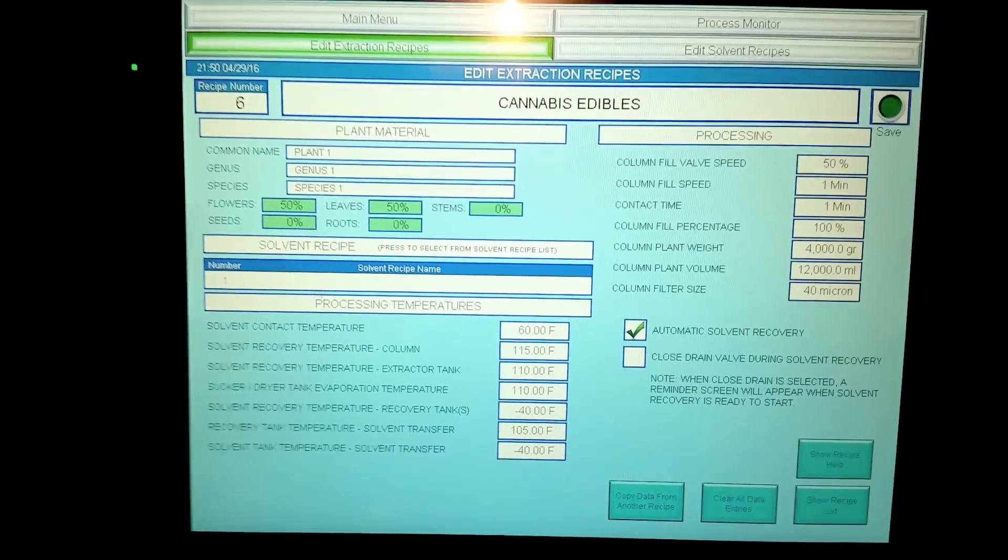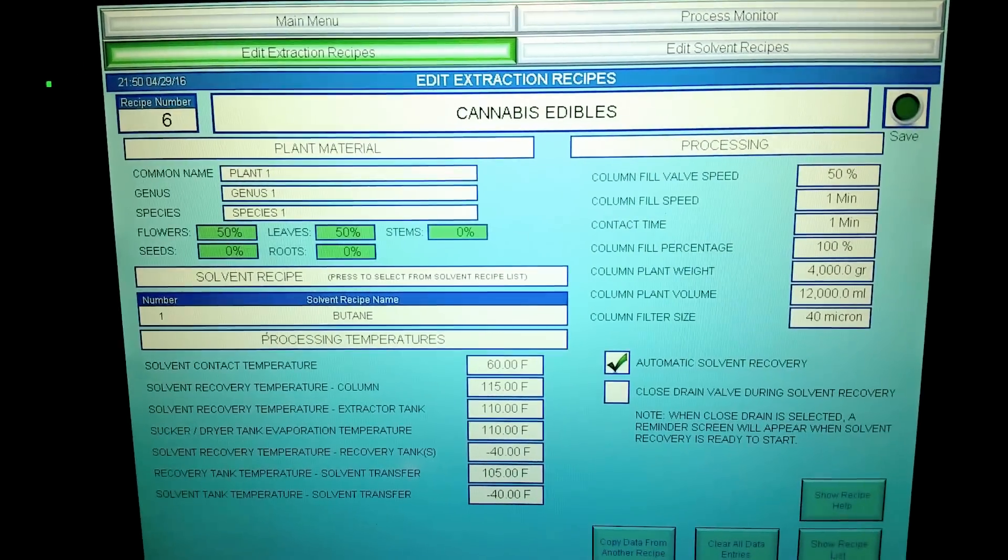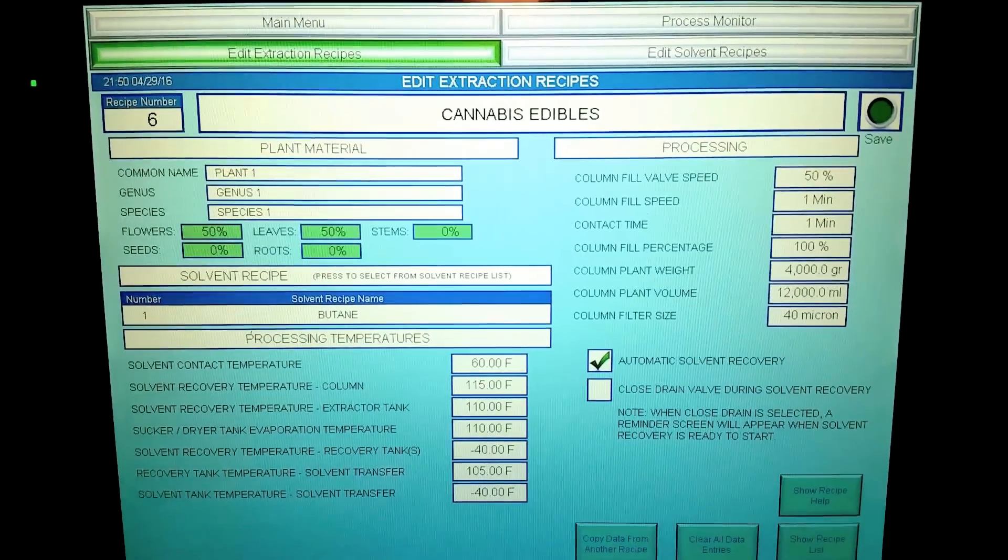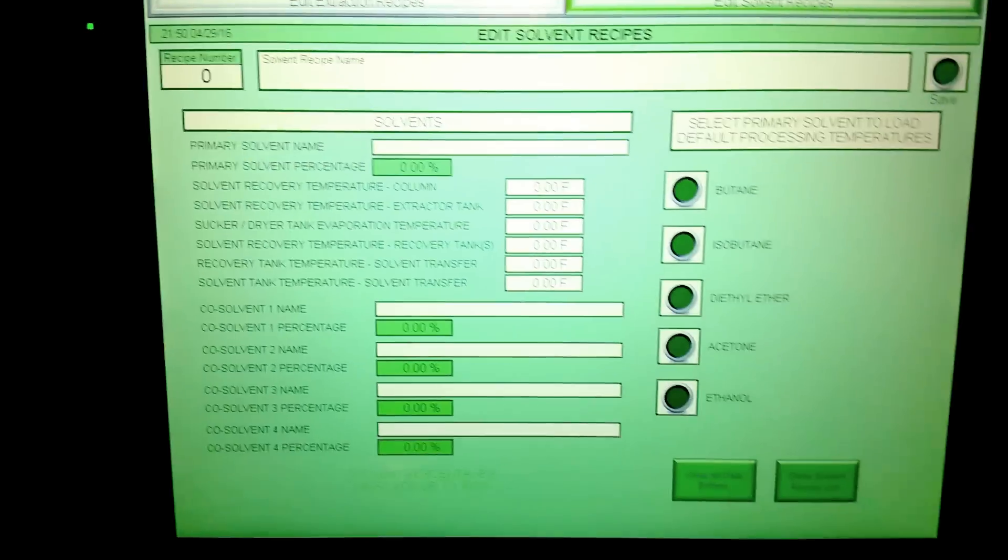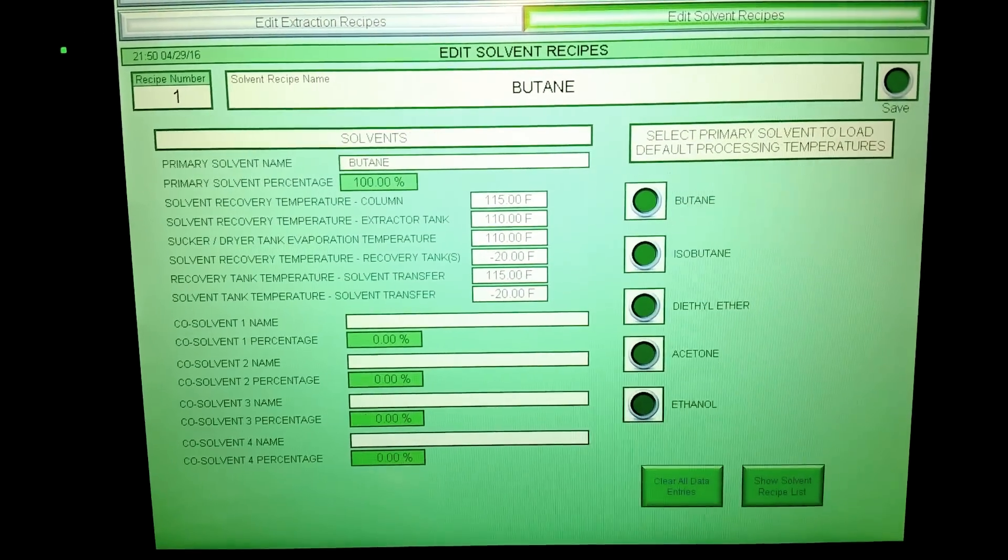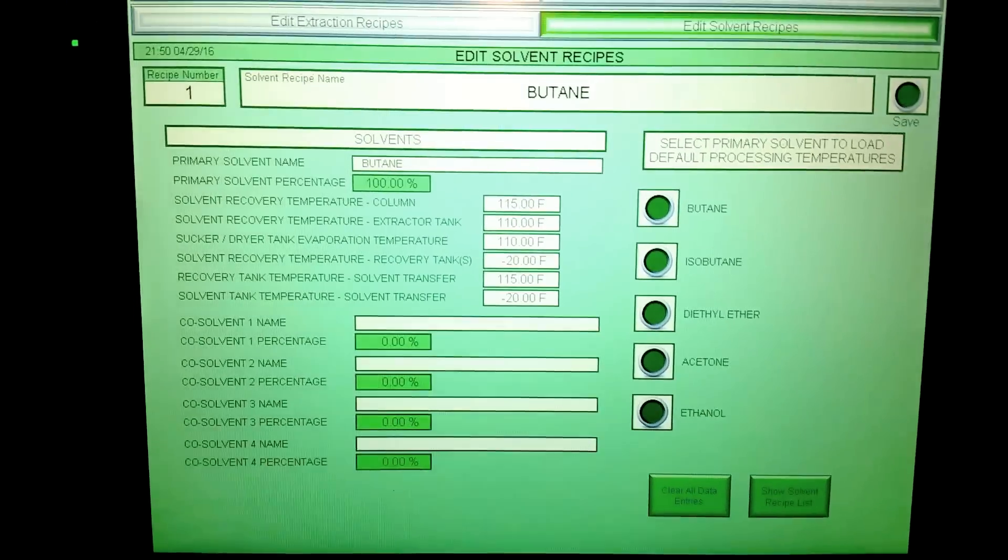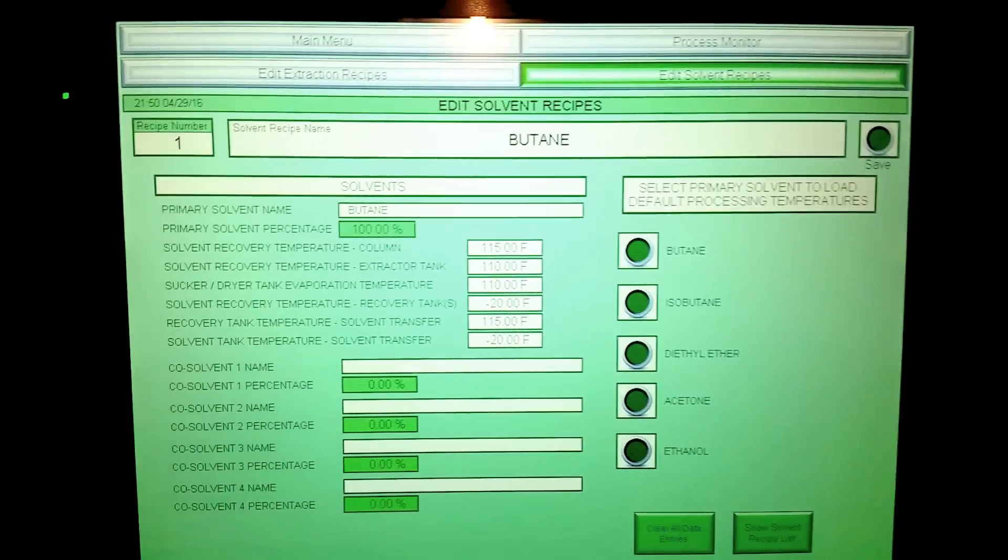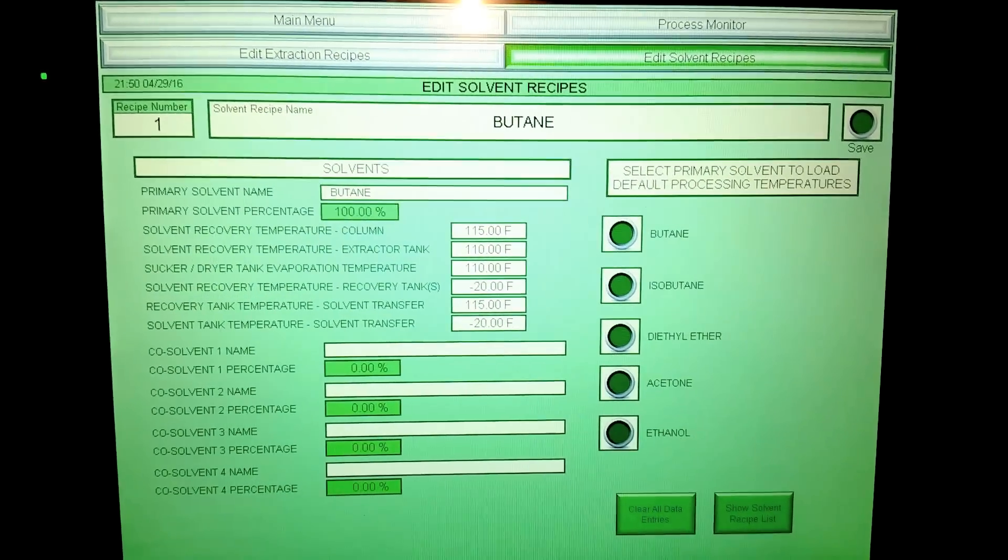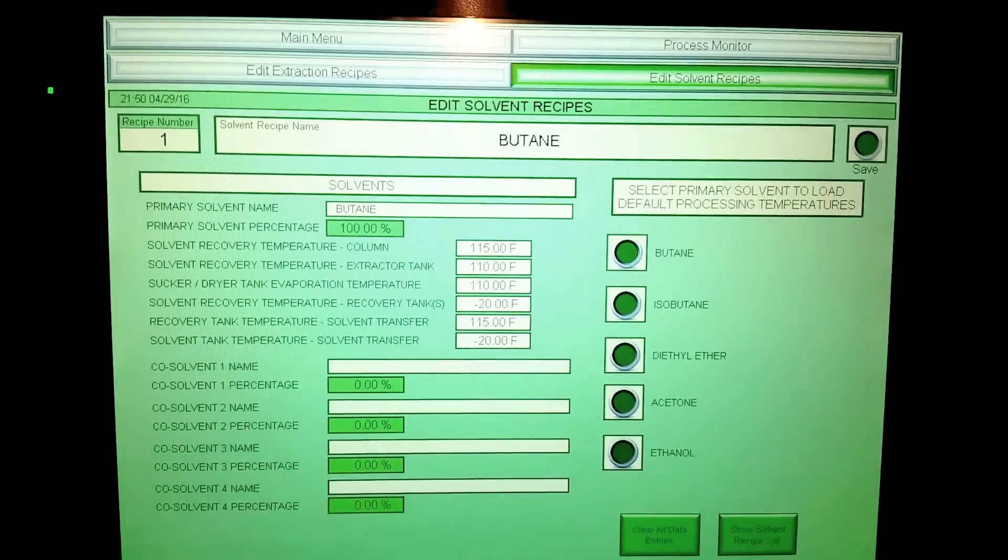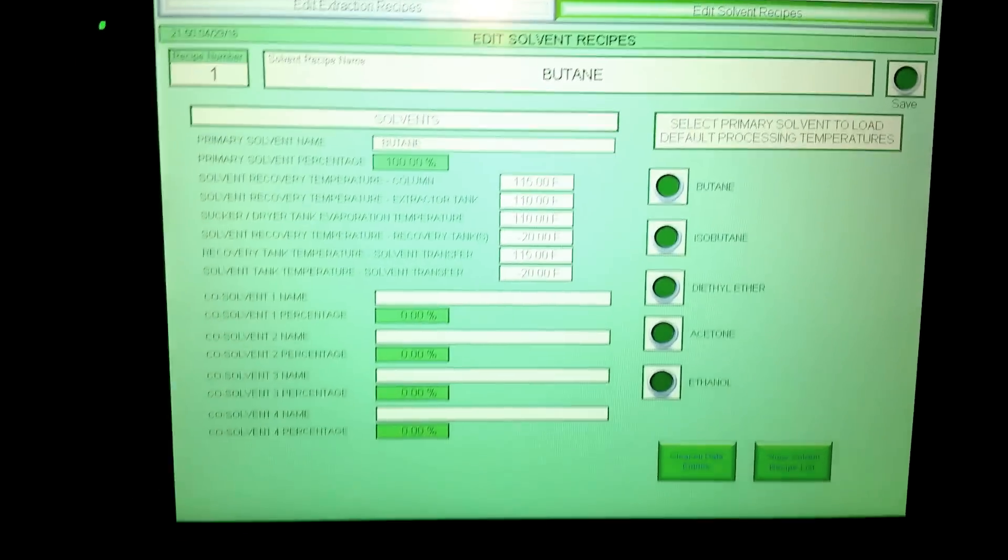Edit your extraction recipe. Edit your solvents. In this particular extraction we're using butane. You could use isobutane, diethyl ether, dimethyl ether, alcohol, acetone, whatever you need to use.